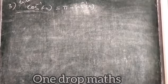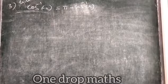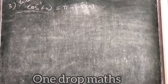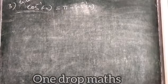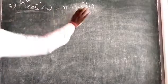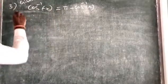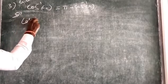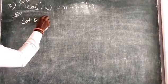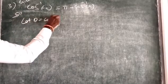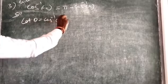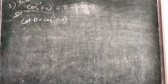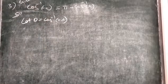In this question we are asked to verify the result: cos⁻¹(-x) = π - cos⁻¹(x). So we want to verify both sides are equal. We take theta equal to cos⁻¹(-x).